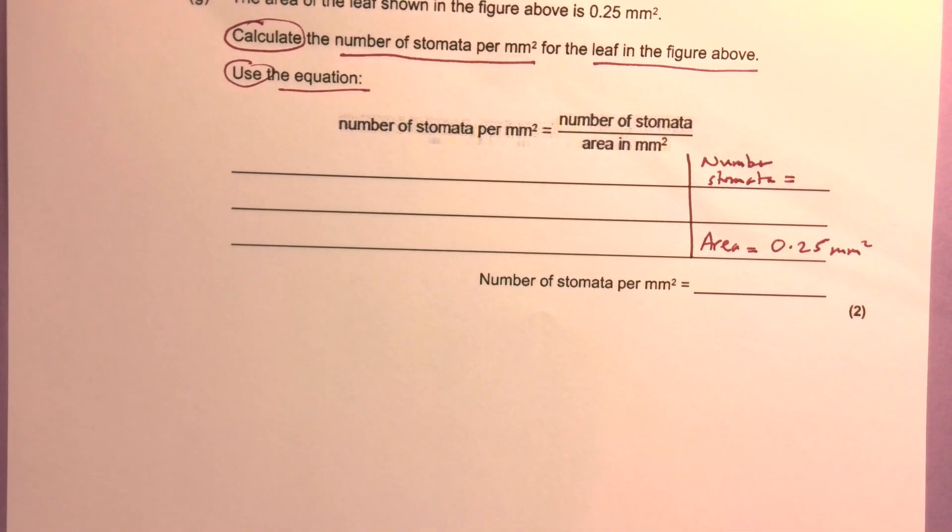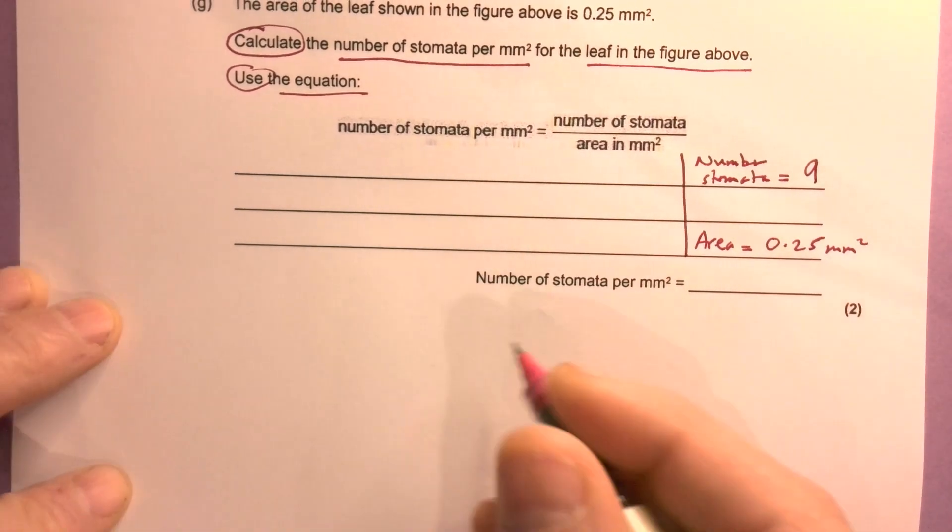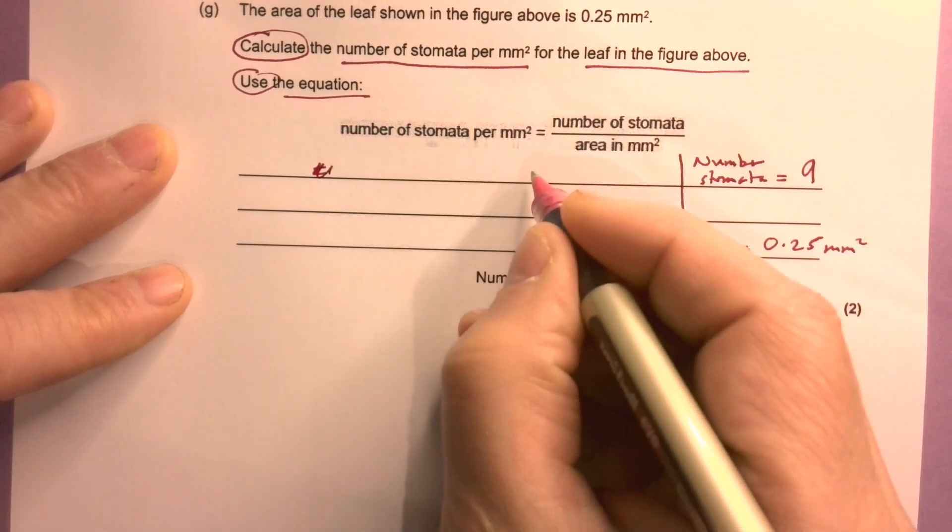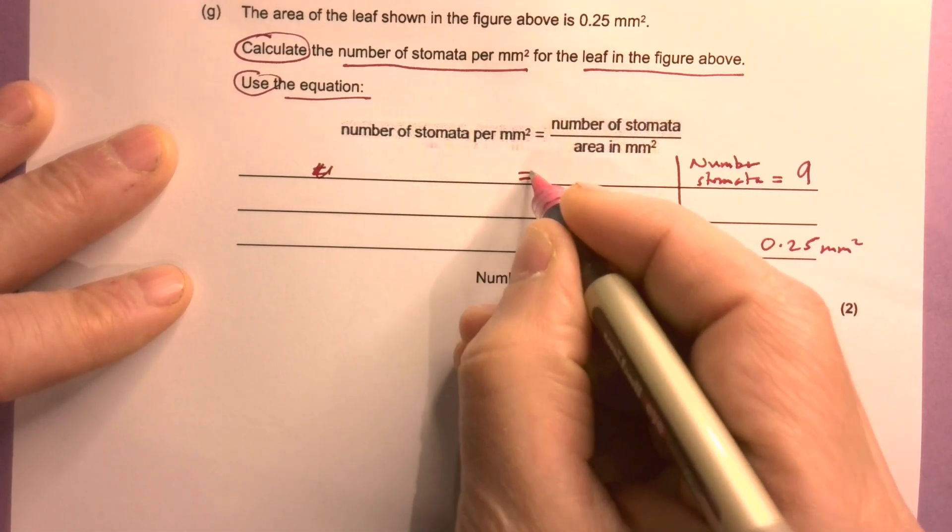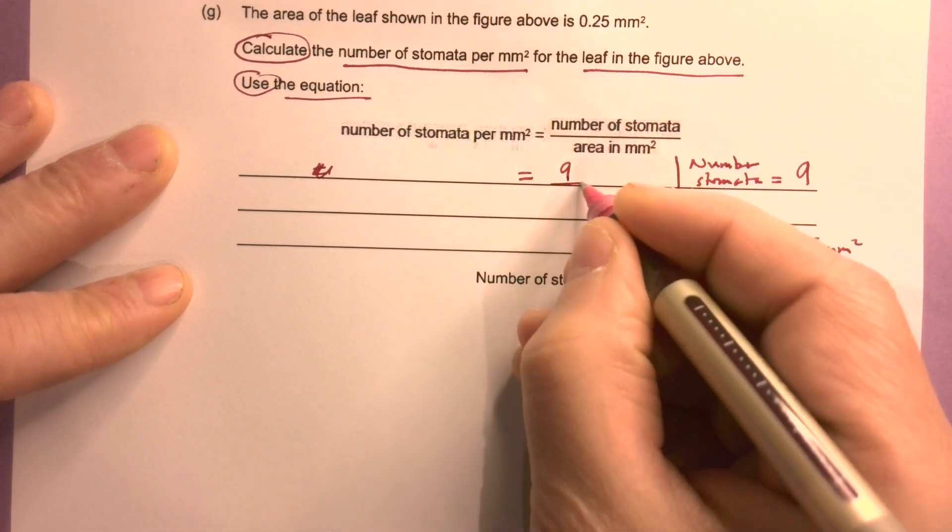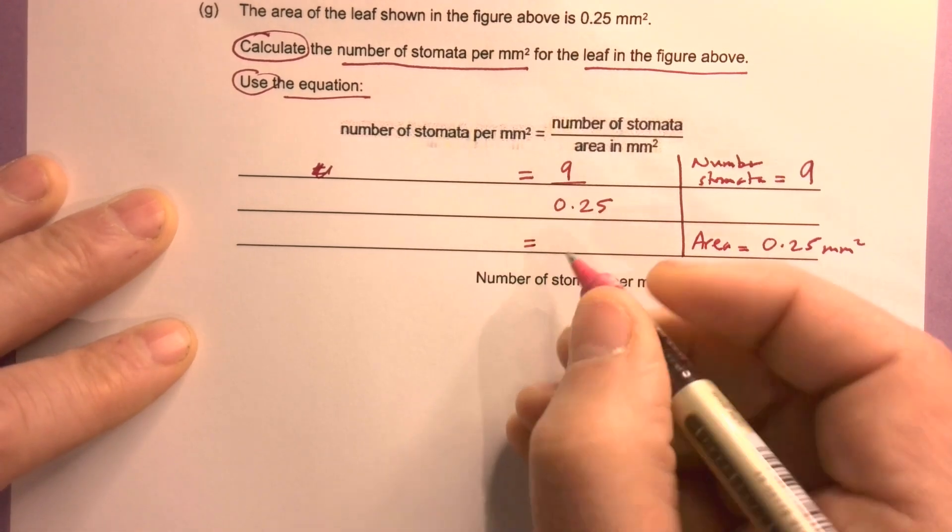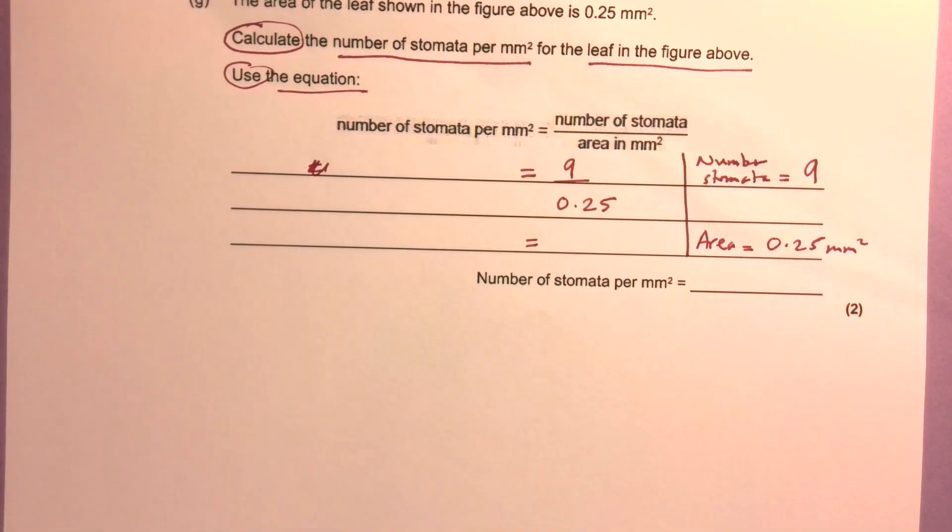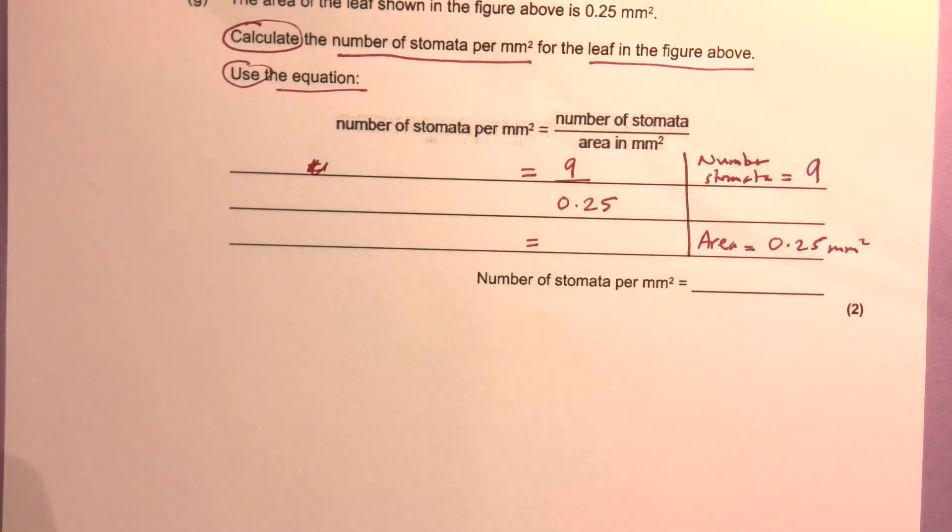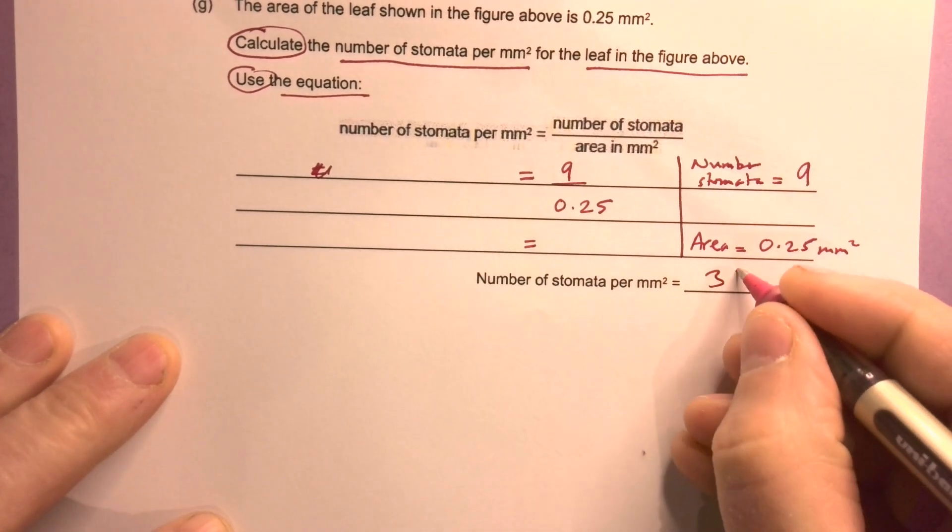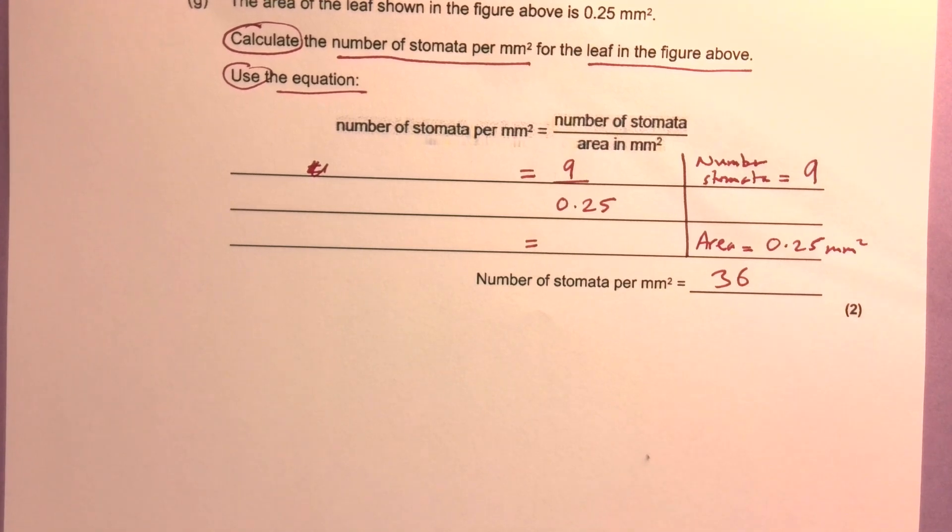Okay, so I've got 9 stomata in total. So it equals number of stomata, 9, divided by 0.25. Let me use my calculator. 9 divided by 0.25 equals 36. And there's no units to that.